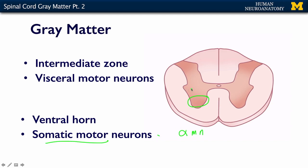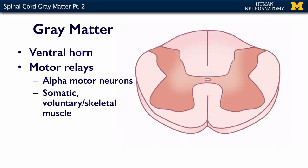Depending on the region, you also have the intermediolateral cell column, which is in the intermediate zone, and this contains the neurons that are going to innervate your hollow organs. This area represents one of those enlargements — like the lumbar enlargement.